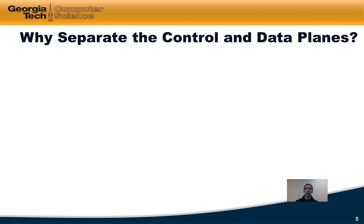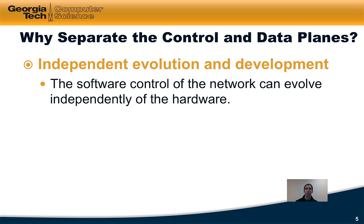So why separate the data plane and the control plane? One reason is that by separating them, each can evolve and be developed independently. In particular, the software control of the network can evolve independently of the hardware. That means one can buy routers, switches, middleboxes, and so forth, deploy them in the network, and not be bound by the capabilities of software that shipped with the hardware at that particular time.